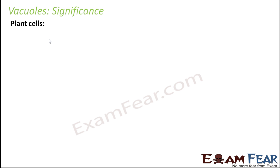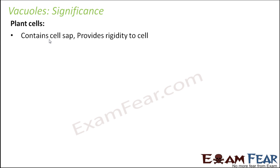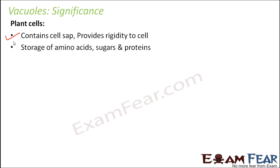The significance of vacuoles in plant cells is that they contain the cell sap and therefore provide rigidity to the cell. Plant cells are more delicate and exposed to changes in the environment, so rigidity is important. These vacuoles provide rigidity because they are filled with fluid. They also help in storage of amino acids, sugars, and proteins — they serve as quite big storage containers.